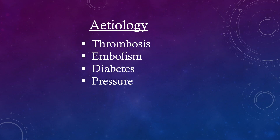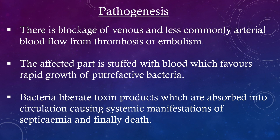Etiology: thrombosis, embolism, diabetes, pressure. Pathogenesis: There is blockage of venous and less commonly arterial blood flow from thrombosis or embolism. The affected part is stuffed with blood, which favors rapid growth of putrefactive bacteria. Bacteria liberate toxin products which are absorbed into the circulation, causing systemic manifestations of septicemia and finally death.